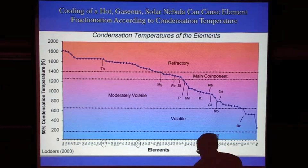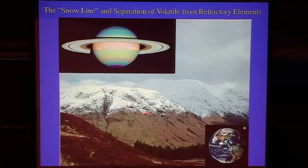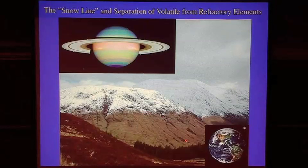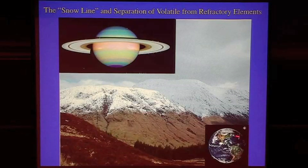This idea of volatility-controlled condensation leads to the idea of a snow line. If you're out beyond the point where water ices are condensing, you can form giant gaseous planets with their full complement of hydrogen or at least a large proportion of it. Whereas if you're inside this line, the temperature is too hot to allow water to condense as a solid — it's left in the gas phase and probably blown away by an early active sun. So in the inner solar system you get terrestrial planets made out of rocky elements like olivine and iron metal.